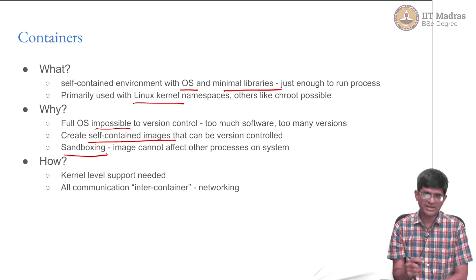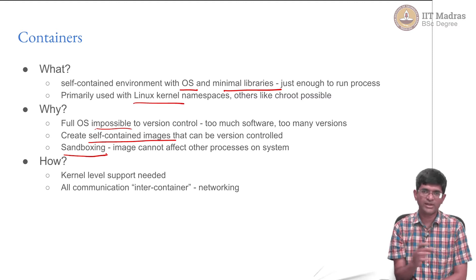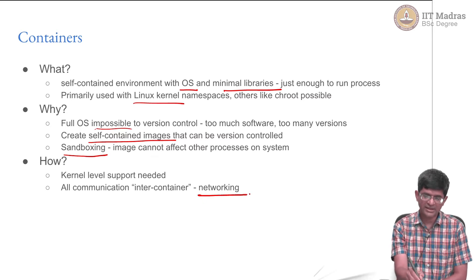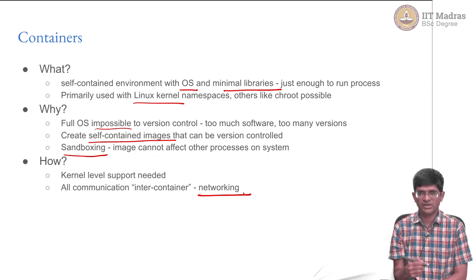Since each process is now self-contained, it cannot directly talk to another process or share information with another process. This means that all communication between processes is usually done through explicit networking, and container-level networks are created for this.